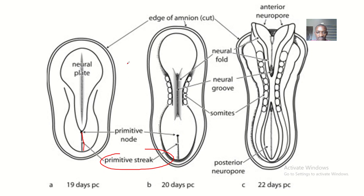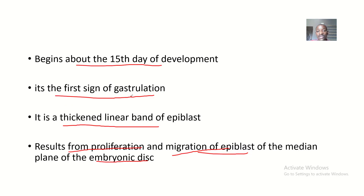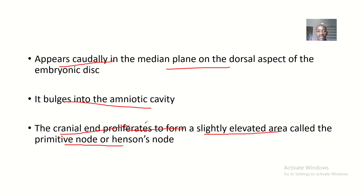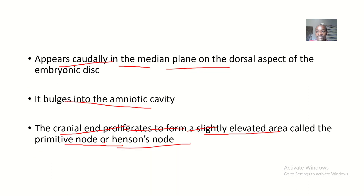The primitive groove is continuous with Hensen's node. The primitive node is where the primitive streak starts from. To summarize the key points: day 15 is the first sign of gastrulation; it is a thickened band of epiblast; it appears caudally; the cranial part forms Hensen's node, the primitive node. That covers the formation of the primitive streak — see you in the next tutorial.